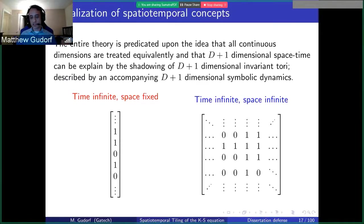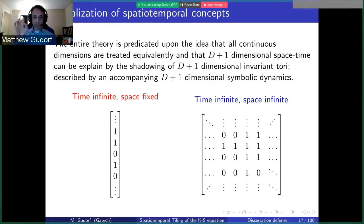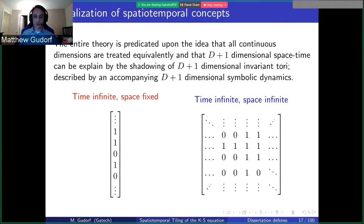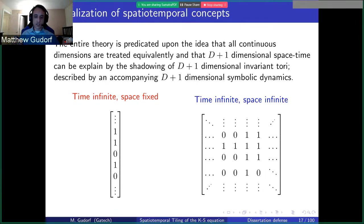By doing so, we're saying that locally, you're going to be shadowing small d+1 dimensional invariant tori. The little matrices I've given here represent what you would envision the symbolic dynamics as being. When on a fixed spatial domain proceeding through the inertial manifold in time, with the simple assumption of binary dynamics, you would alternate and visit different regions of state space labeled with some symbols. As space and time are infinite, now you have to specify a two-dimensional symbolic sequence in order to specify the pattern you're shadowing within space and time.